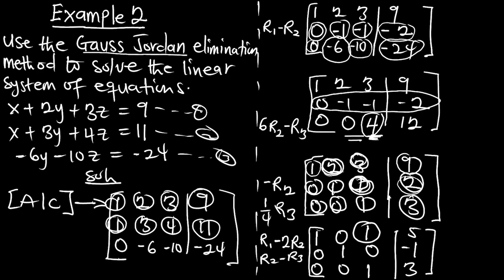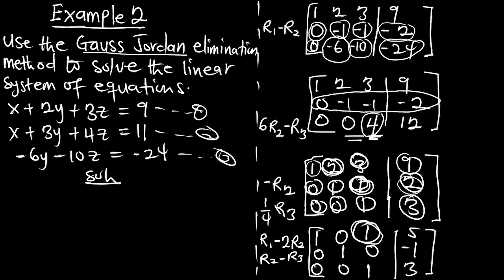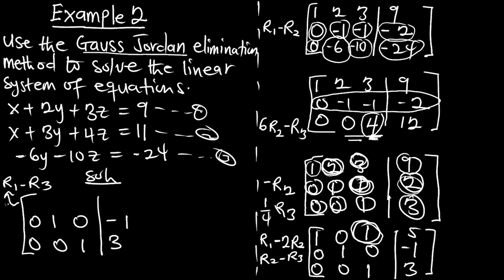I am left with the 1 in row 1, column 3 to turn to 0. Applying R1 = R1 − R3: 1 − 0 = 1, 0 − 0 = 0, 1 − 1 = 0, and 5 − 3 = 2. Row 2 stays: 0, 1, 0, | −1. Row 3 stays: 0, 0, 1, | 3. I have now turned this into the identity matrix.